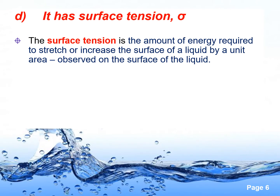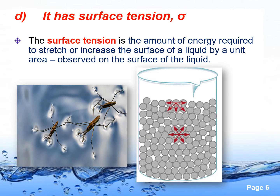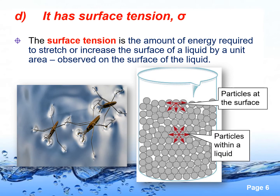Liquid has surface tension. Surface tension is a phenomenon observed on the surface of a liquid. It is caused by intermolecular forces acting between the liquid molecules. The molecules on the surface of the liquid are pulled inwards and sideways by the neighboring molecules, but the molecules within the liquid experience intermolecular forces from all directions. This causes the liquid surface to tighten like an elastic film. This is one reason why water striders can walk on the surface of water, besides because of their unique legs.